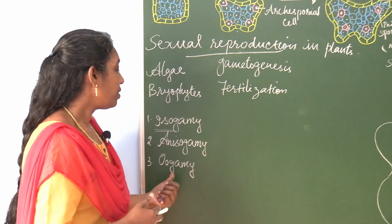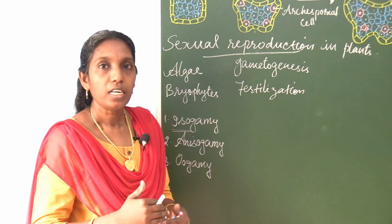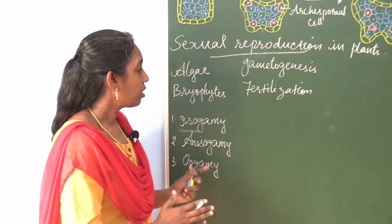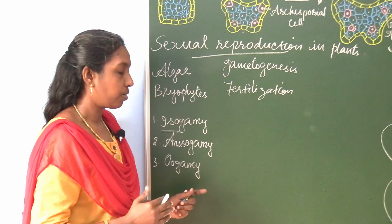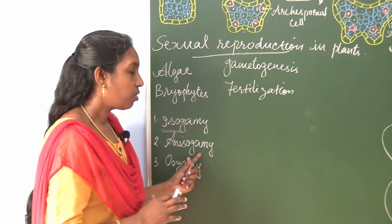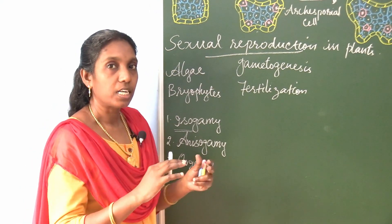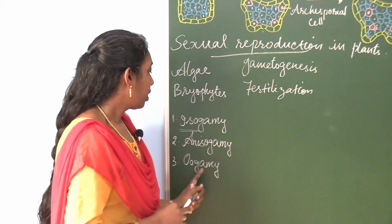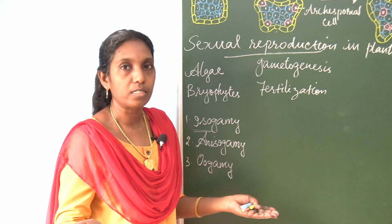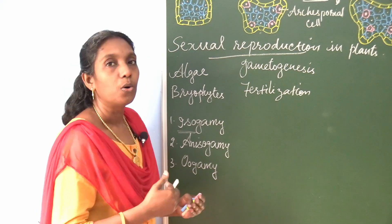Another type is oogamy. In oogamy, both morphologically and physiologically the gametes are dissimilar — completely dissimilar. So there are three different types: isogamy, where gametes are similar; anisogamy, where gametes are either physiologically or morphologically dissimilar; and oogamy, where both the gametes are completely dissimilar, both morphologically as well as physiologically.